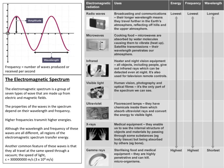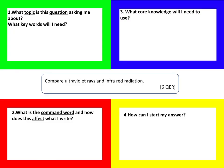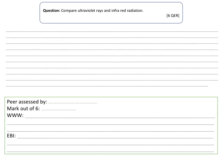Now we move on to comparing infrared and ultraviolet radiation. This is going to be exactly the same as the previous two questions. Fill in the boxing-up sheet in the same way, then write a long-answer response comparing how they are similar and how they are different, focusing on energy, frequency, and wavelength.